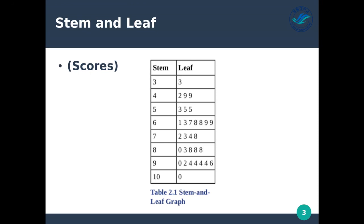So 3, 4, 5 represents 30, 40, 50. Then we have a leaf, which is the least significant digit. The stem and leaf together — the first sample is actually 33, the next samples are 42, 49, 49, 53, 55, and so on.